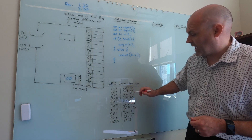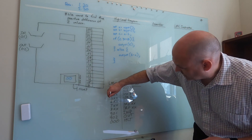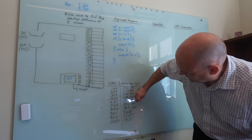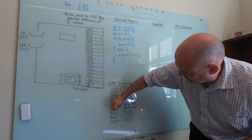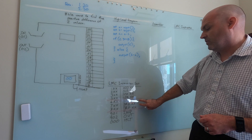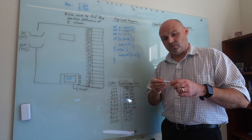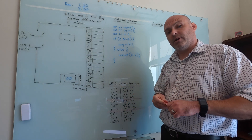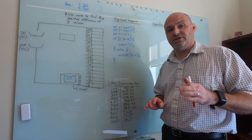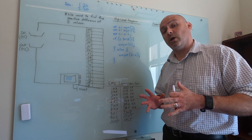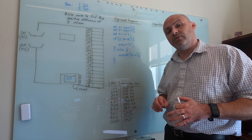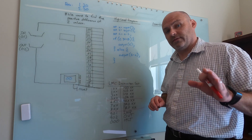Before we had everything up to five and everything below eight. These three are new — we have three branch instructions. A real machine instruction set will have many more usually, but we can do everything we need to do with these three.